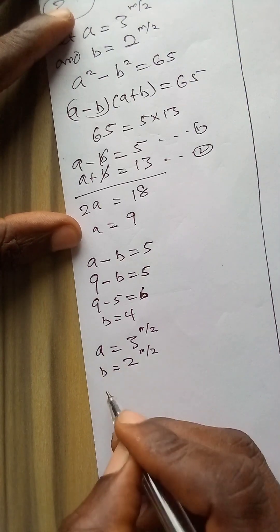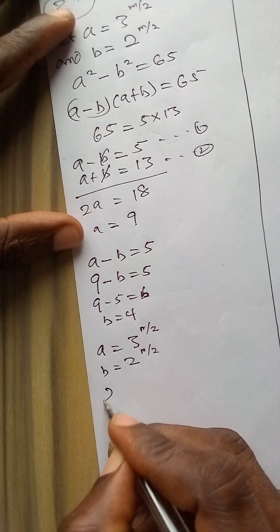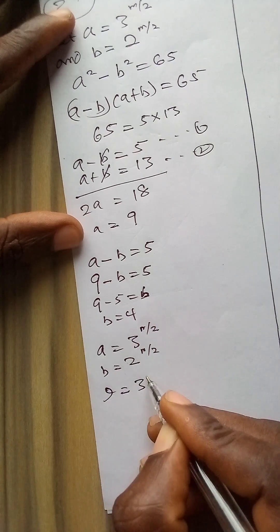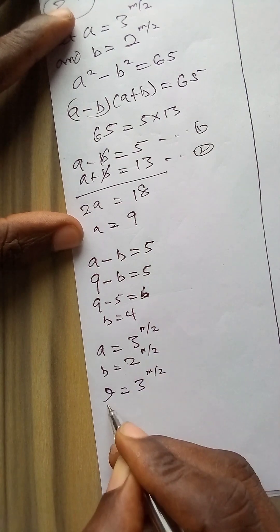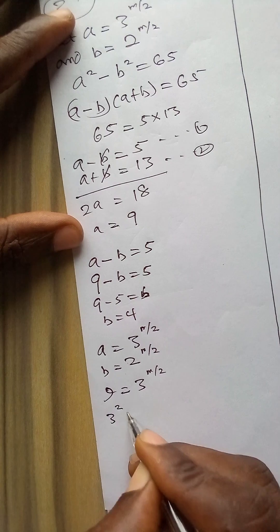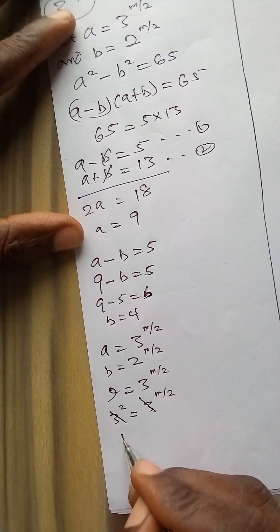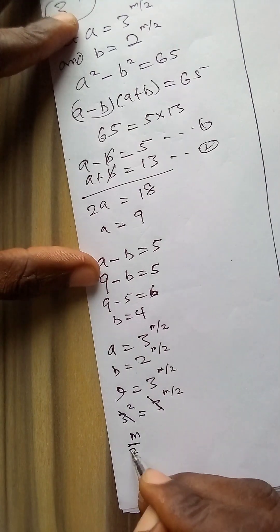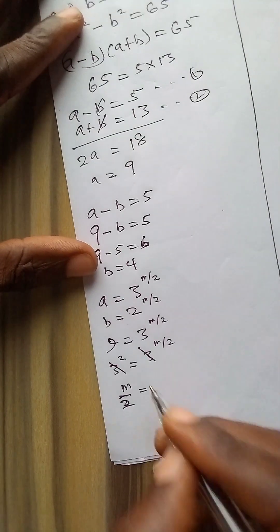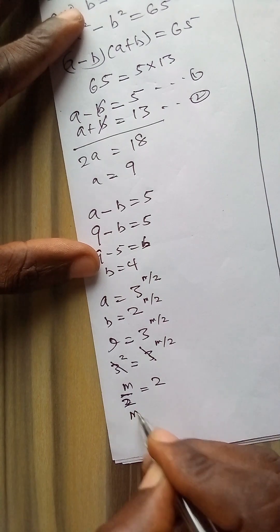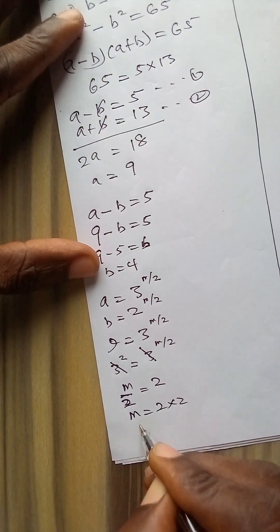So putting 9 for a here, that becomes 9 is equal to 3 to power m over 2. 9 is 3 to power 2 and we have 3 to power m over 2, so this will cancel. My m over 2 will now be equal to 2. Cross multiplying, m is equal to 2 times 2 which is 4.